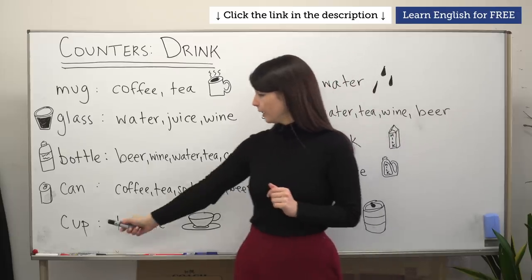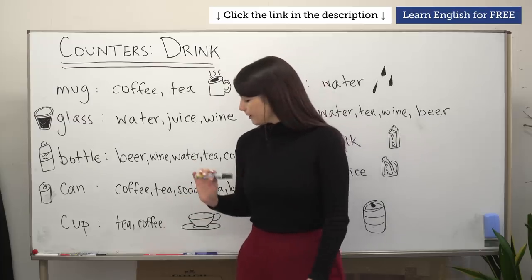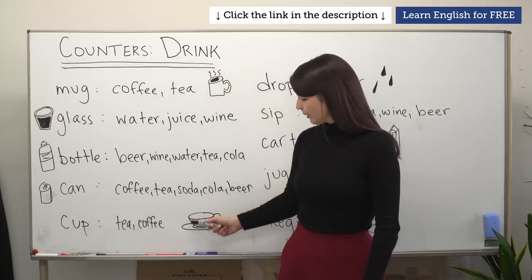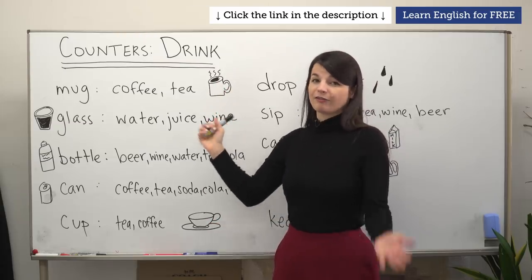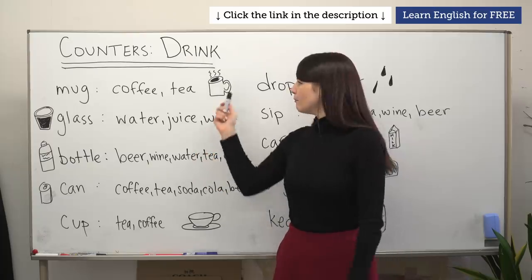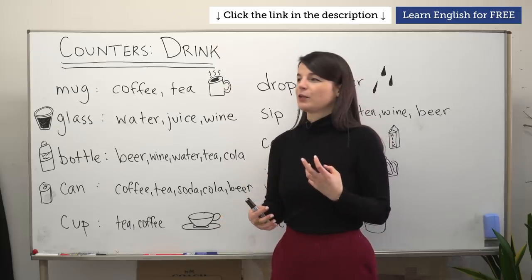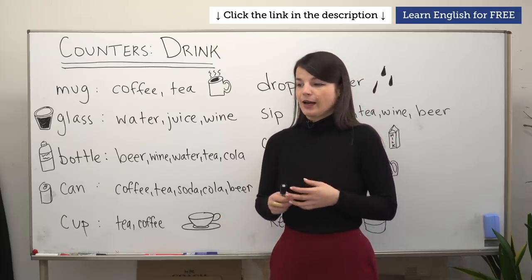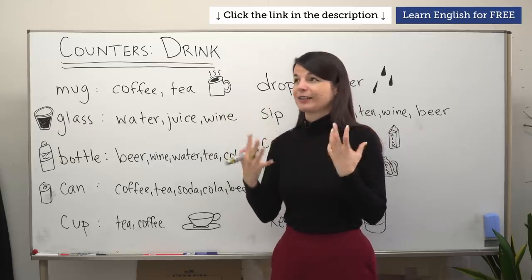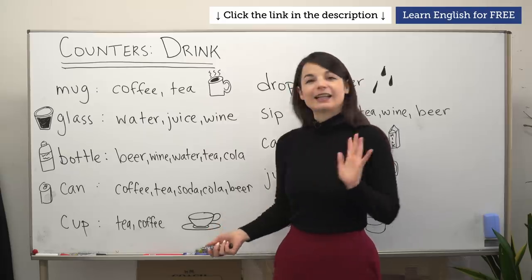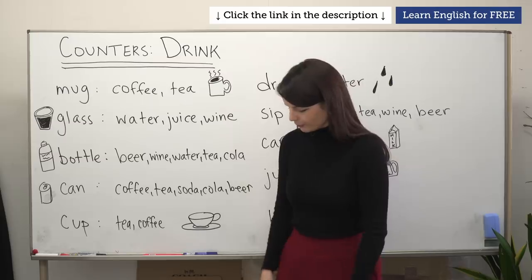Next one is cup. We usually use cup with coffee and tea, which is a little bit different from mug. A cup maybe looks a bit lighter than a mug. A mug kind of has the image of something warm, thick, and heavy. A cup has a feeling of something a little bit lighter and doesn't necessarily have to be for a hot drink. So we can use cup for tea or coffee as well.